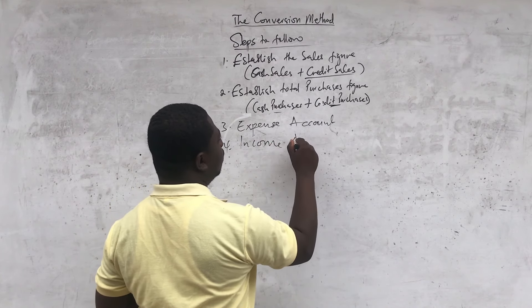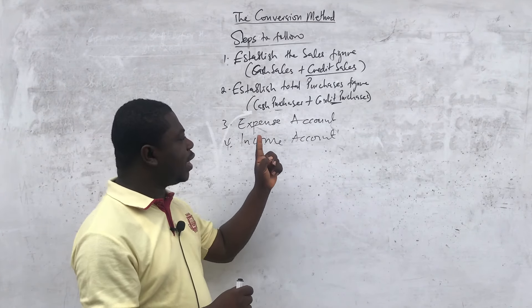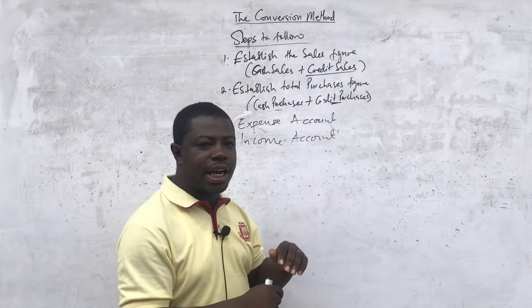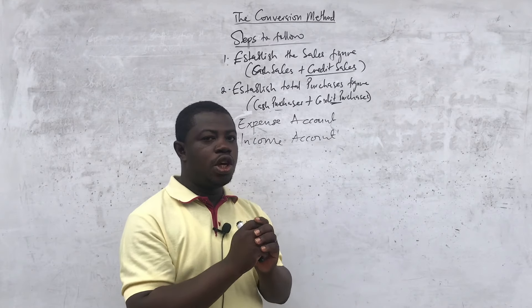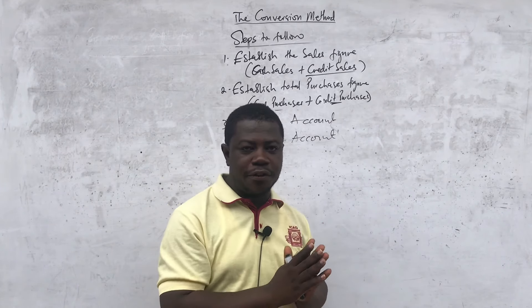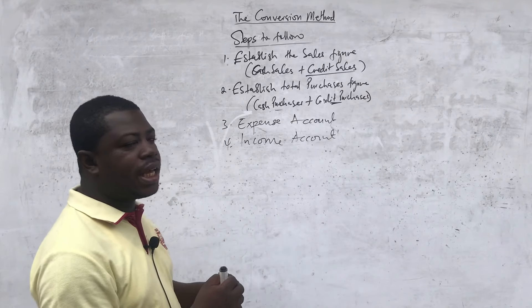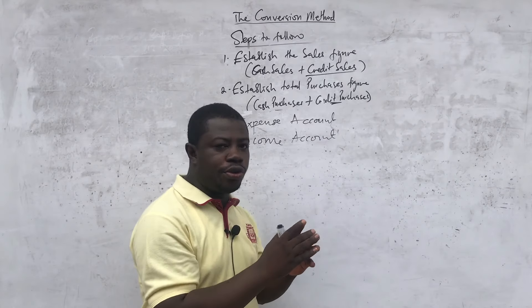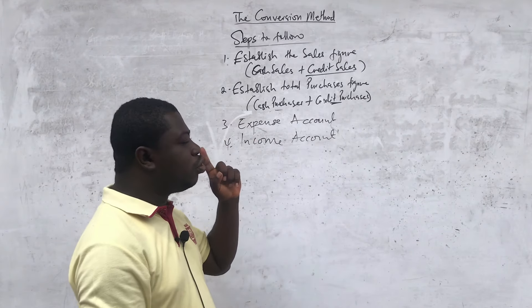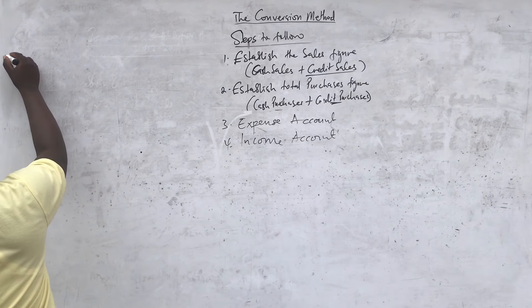The purpose of preparing the income accounts and the expense account is to ascertain the expense figure or value to go to the income statement, and also the other income values, using the principles of accruals and prepayment. You are going to prepare the accounts — it depends on the expense: it could be rent, it could be salaries, or any other expense. I'm going to give you the format for the expense account using the principle of accruals and prepayment. Even if there are ten expenses, you need to prepare accounts for all ten before you can establish each amount to take to the profit and loss account or income statement.